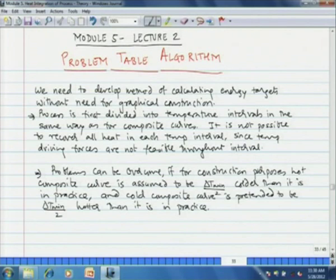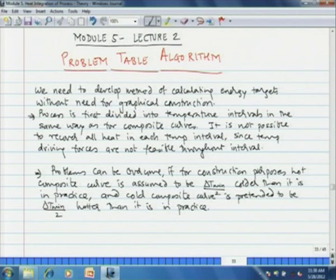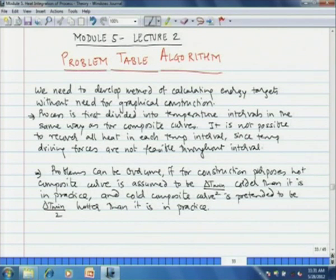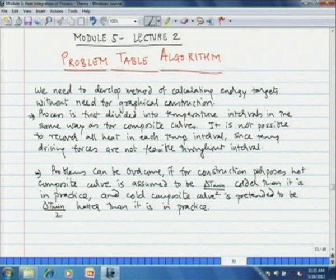We need to develop a method for calculating the energy targets without the need for graphical construction. The process is first divided into temperature intervals in the same way as for the composite curves. It is not possible to recover all heat in each temperature interval since the temperature driving forces are not feasible throughout the interval. This problem can be overcome if the hot composite curve is assumed to be delta T min by 2 colder — that is, temperatures are reduced by delta T min by 2 — and the cold composite curve is pretended to be delta T min by 2 hotter, increasing temperatures by the same quantity.